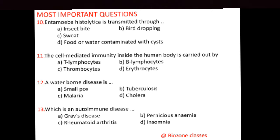Question number 13: Which is an autoimmune disease? Options: A. Graves' disease, B. Pernicious anemia, C. Rheumatoid arthritis, D. Insomnia. The correct answer is C, that is rheumatoid arthritis.